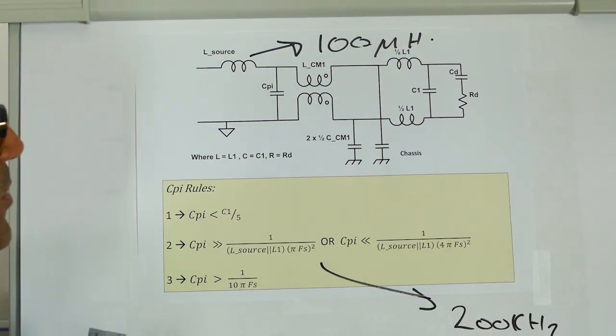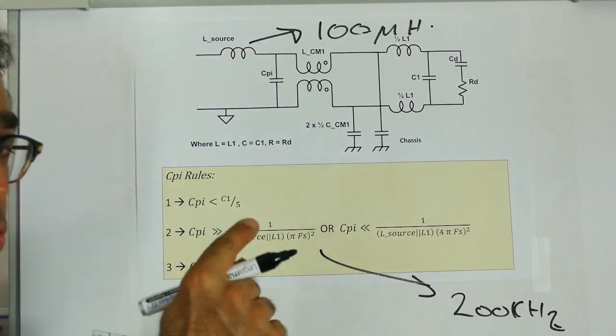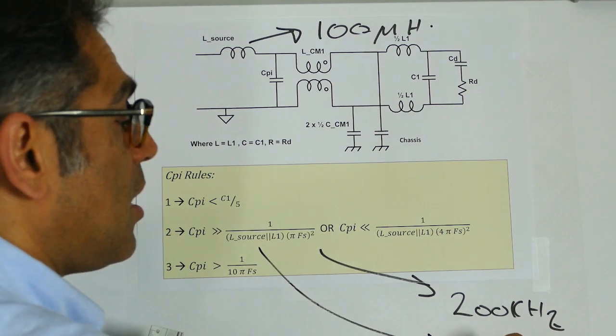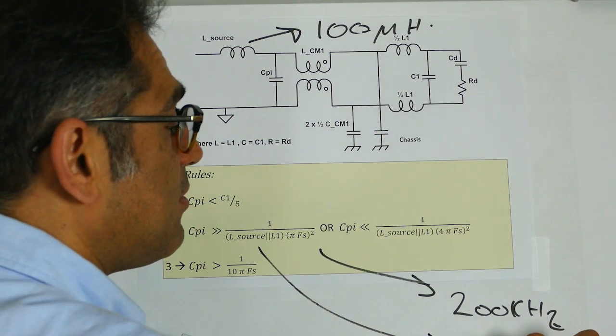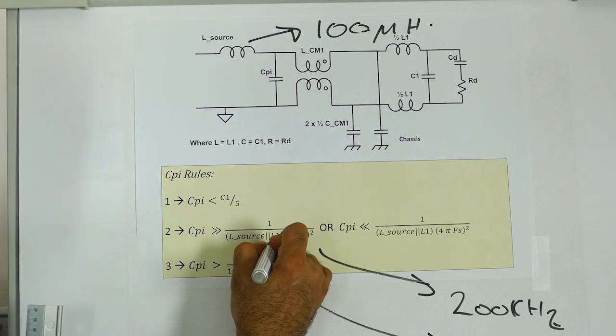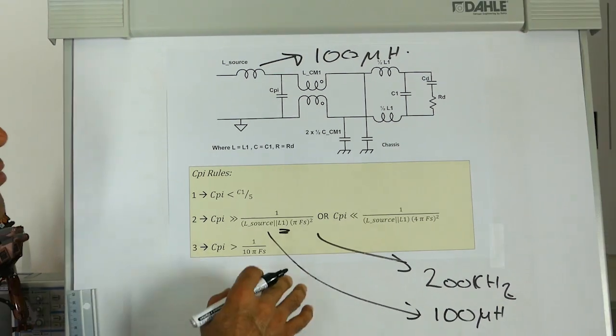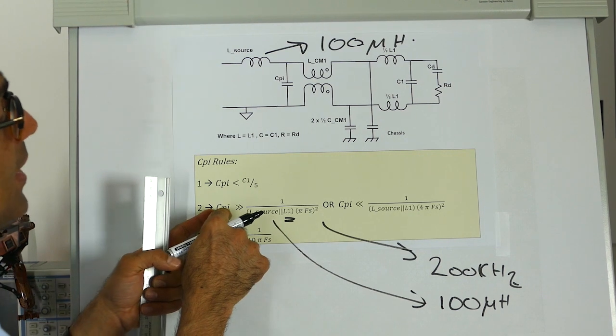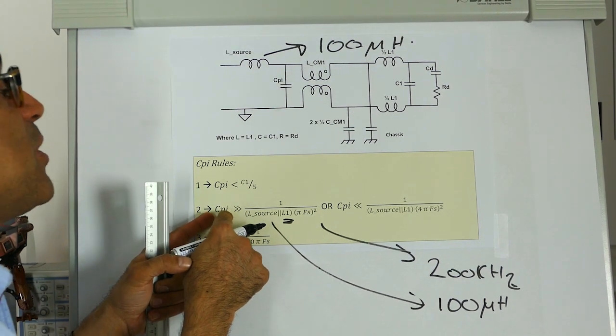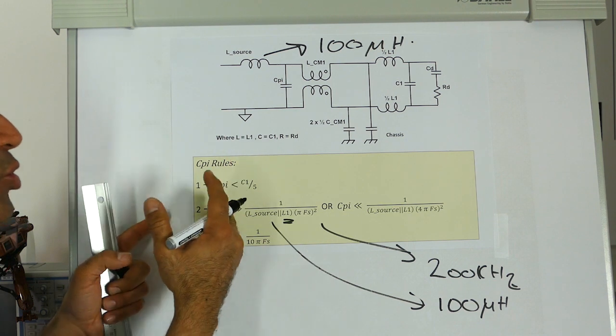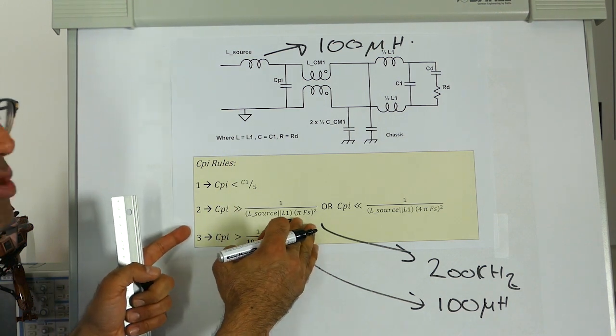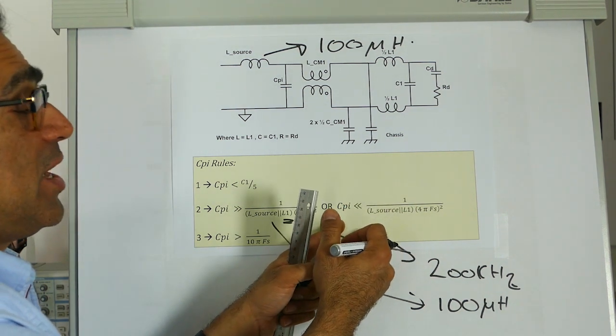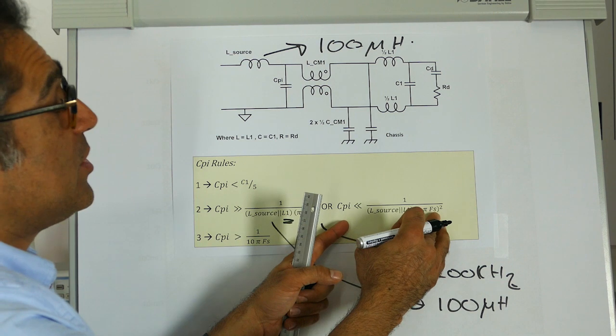I am using a CISPR 16 LISN and that is 2 times 50 microhenries. So L source is equal to 100 microhenries. I calculated L1 in one of the previous videos and therefore I can calculate what value of Cpi I can have where it must be bigger than so that I don't cause a resonance at the switching frequency or how much it should be smaller than, what value should be smaller than so that again I do not cause resonance with the switching frequency.